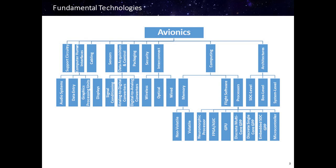There are many fundamental technologies required to implement avionic systems. Starting with architectures, there are architectures needed at various levels of abstraction, ranging from the system level — which dictates how boxes and subsystems are interconnected — all the way down to architectures within a chip itself. Computing systems are needed, which can include processors, a variety of memory devices, and software. Interconnect is needed, which includes wired connections — both copper and optical cabling — as well as wireless interfaces. Computer-human interfaces are also needed, which can include audio systems, displays, and the graphics hardware needed to drive those displays.